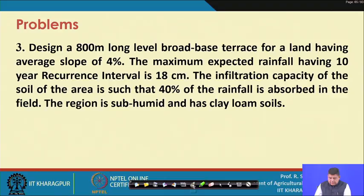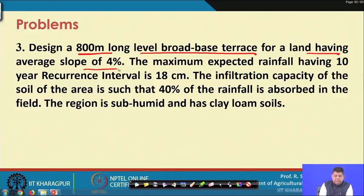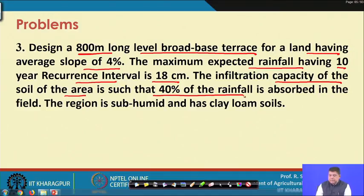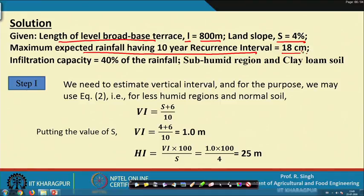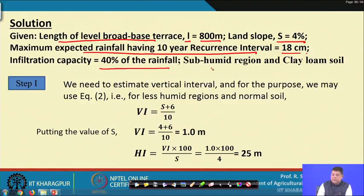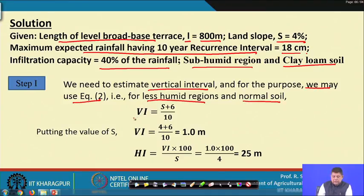Problem 3: Design an 800-meter-long level broad terrace for land having an average slope of 4 percent. Maximum expected rainfall for a 10-year recurrence interval is 18 centimeters. Infiltration capacity is 40 percent of rainfall, meaning 60 percent becomes runoff. The region is subhumid with clay loam soil.